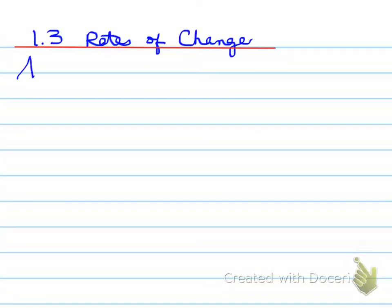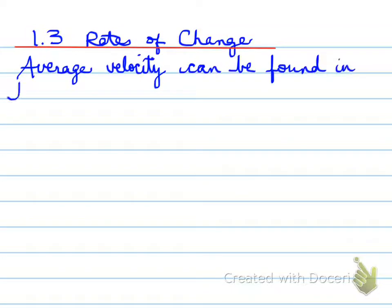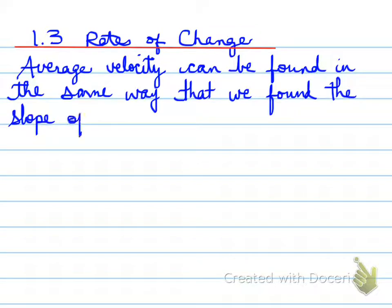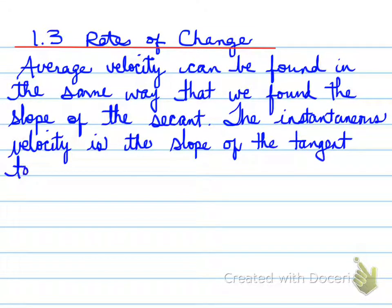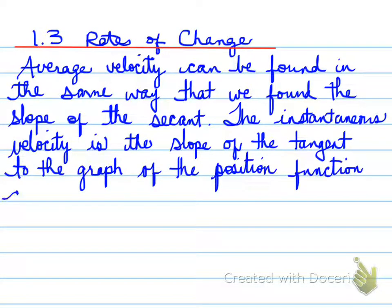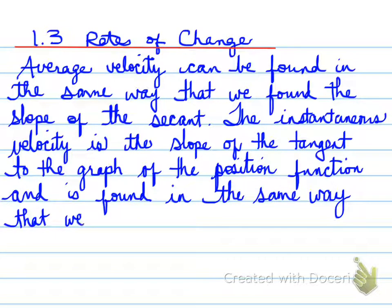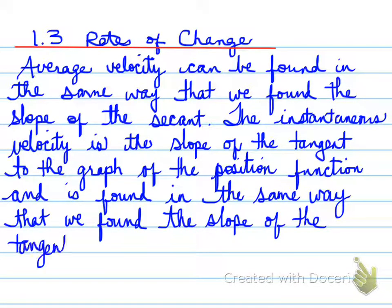Section 1.3: Rates of Change. The average velocity can be found in the same way that we found the slope of the secant. The instantaneous velocity is the slope of the tangent to the graph of the position function, and is found in the same way that we found the slope of the tangent.